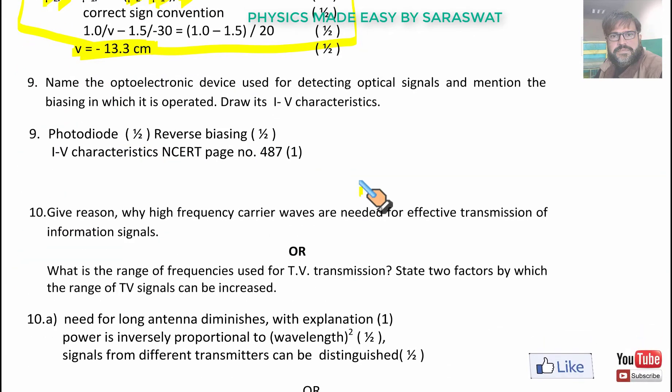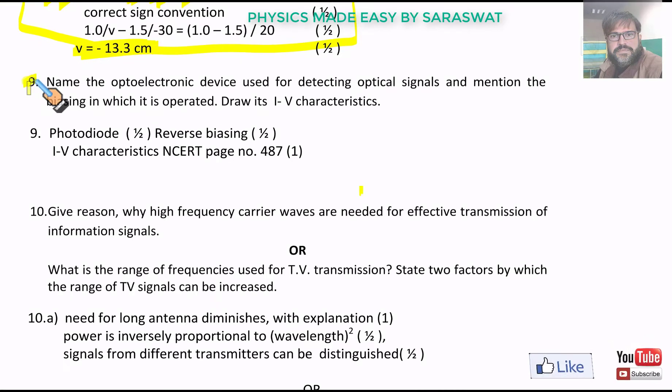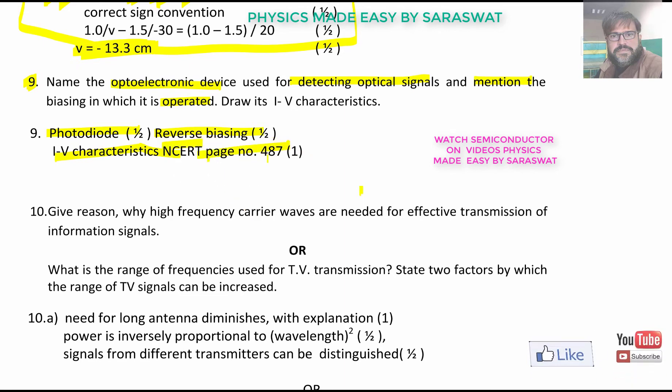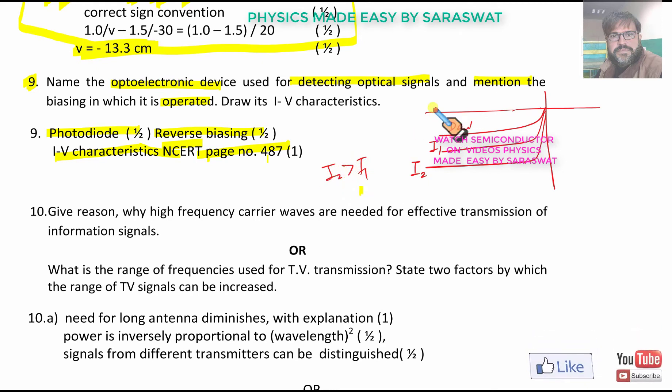Number 9, name the optoelectronic device used for detecting optical signals and mention the biasing in which it is operated. We have a photodiode, it is having reverse biasing and IV characteristics are shown on NCERT page number 487. Reverse bias characteristics: first is the dark current, then we have intensity I₁, then I₂, where I₂ is more than I₁. This is I versus voltage V.